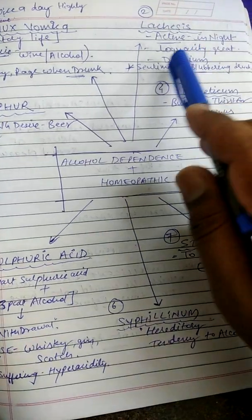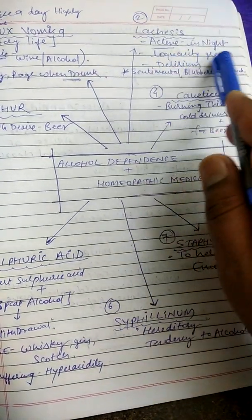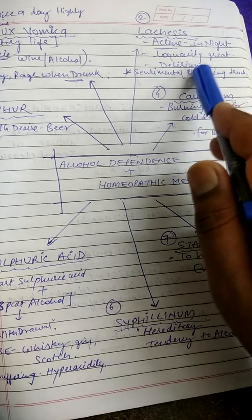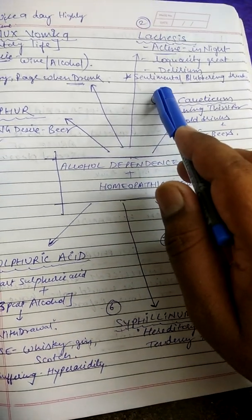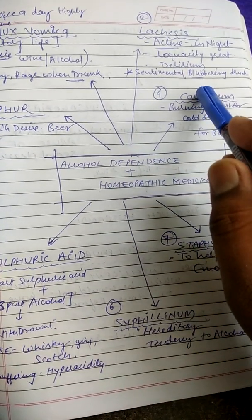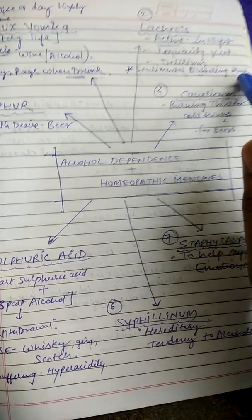Second one is Lachesis — active at night. Great loquacity, great delirium, then sentimental mood, then blubbering. Indicated for alcohol-related drugs and intoxication states.